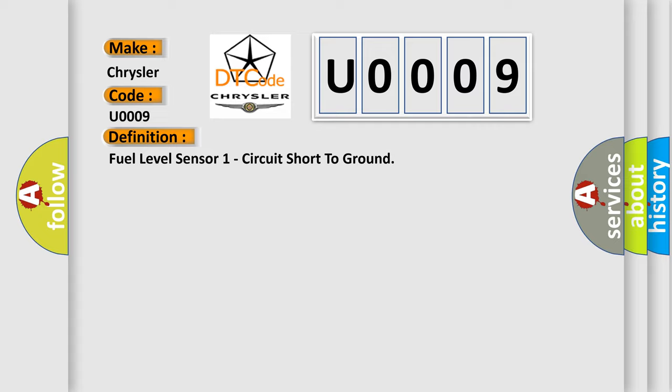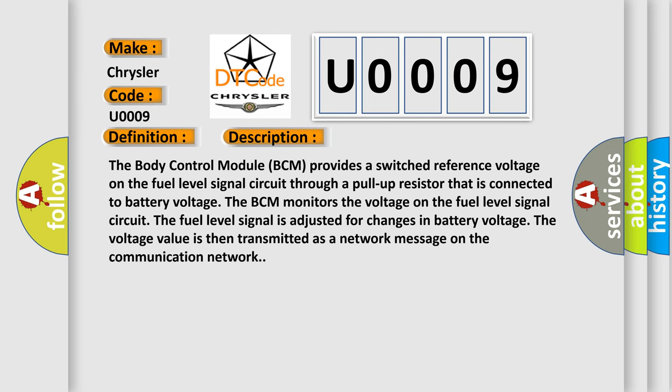And now this is a short description of this DTC code. The body control module BCM provides a switched reference voltage on the fuel level signal circuit through a pull-up resistor that is connected to battery voltage. The BCM monitors the voltage on the fuel level signal circuit. The fuel level signal is adjusted for changes in battery voltage. The voltage value is then transmitted as a network message on the communication network.